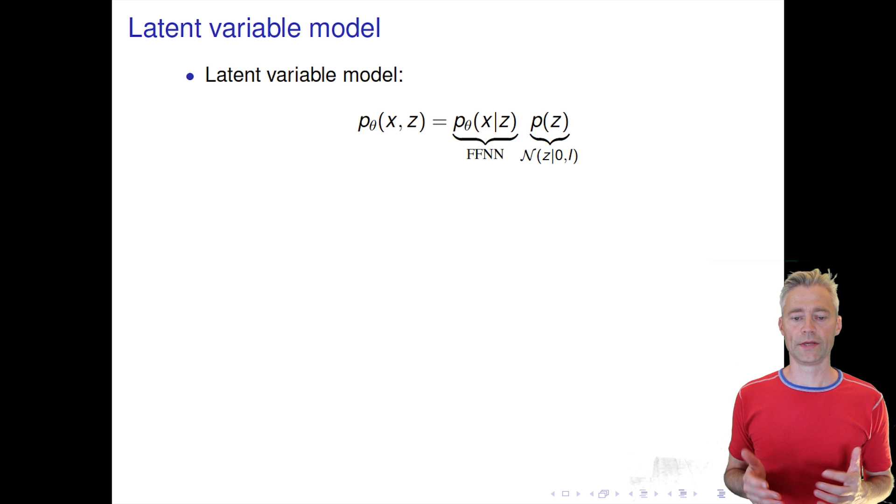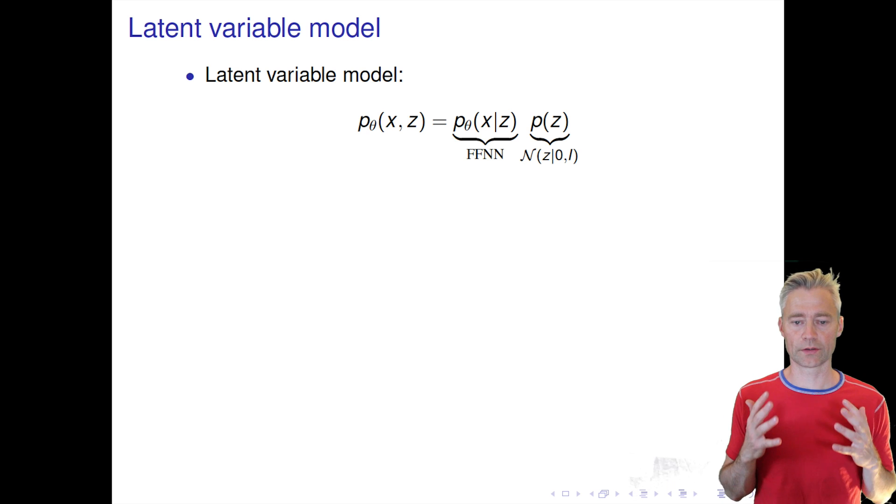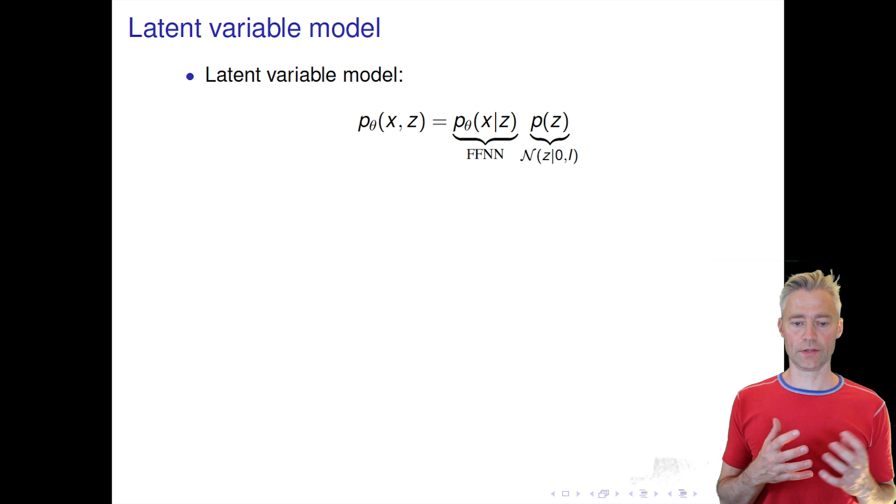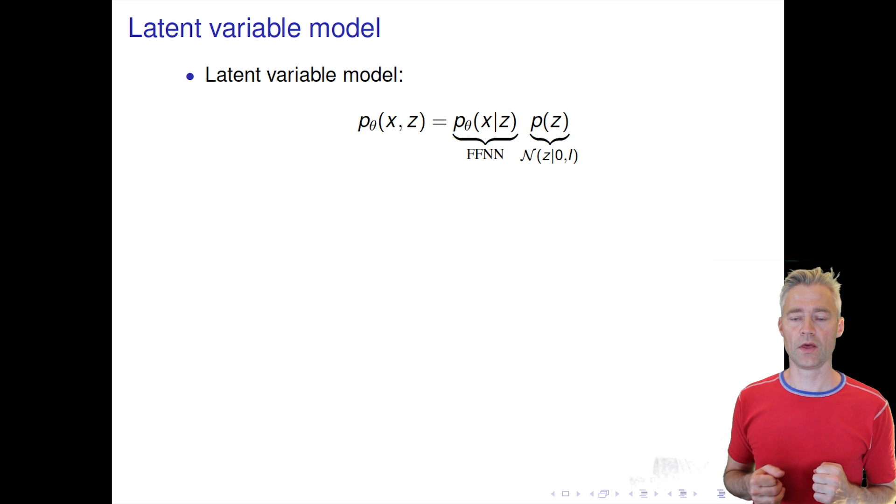So now I want to explain the probabilistic approach to latent variable models. As I said in the previous slide, we want to make all the parts of the model probabilistic. So in our so-called generative model we have the joint distribution of our x's, our observations, and our latent variables z. And we decompose that in terms of a simple distribution, a simple prior distribution p(z).